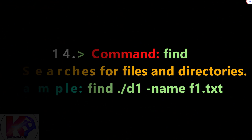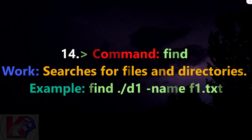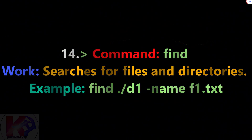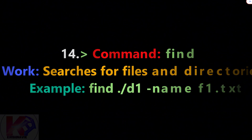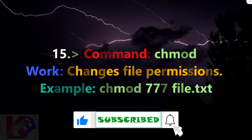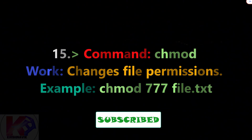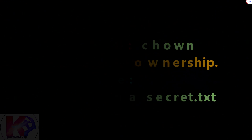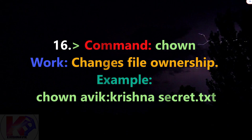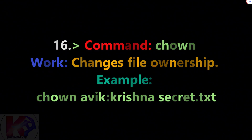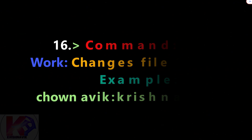Command find: searches for files and directories. Example: find path_to_search -name file_name. Command chmod: changes file permissions. Example: chmod 777 file_name. Command chown: changes file ownership. Example: chown user:group file_name.